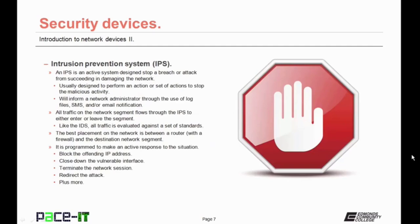More potent than the intrusion detection system is the intrusion prevention system, the IPS. An IPS is an active system designed to stop a breach or attack from succeeding in damaging the network. They're usually designed to perform an action or set of actions to stop the malicious activity. They will also inform a network administrator through log files, SMS text messaging, and/or email notification. For an IPS to work, all traffic on the network segment needs to flow through the IPS as it enters and leaves the network segment.